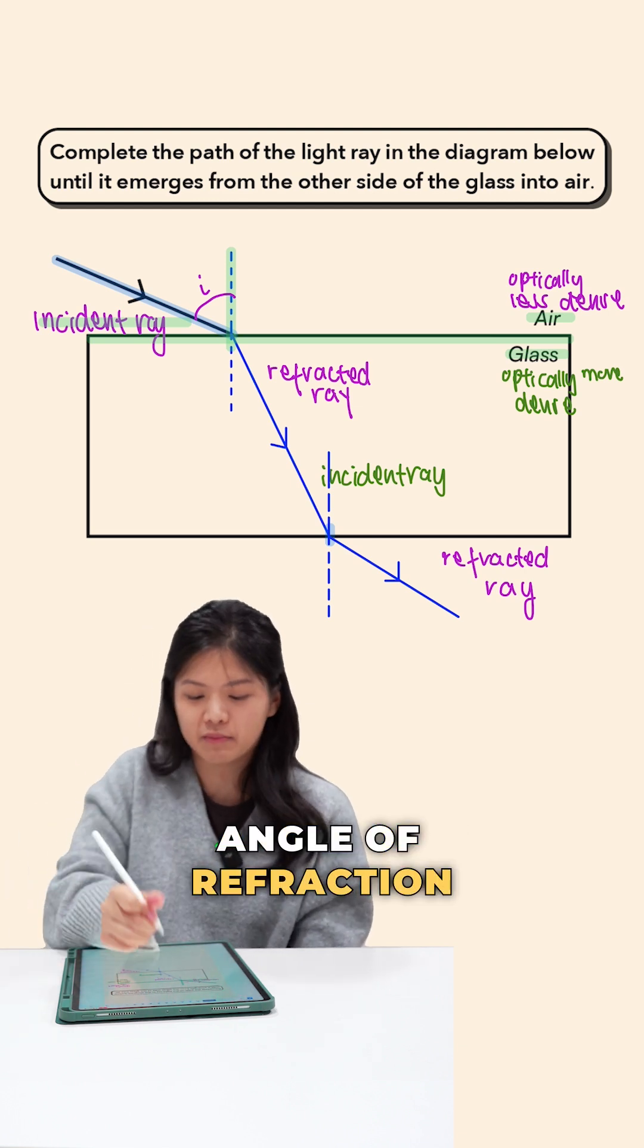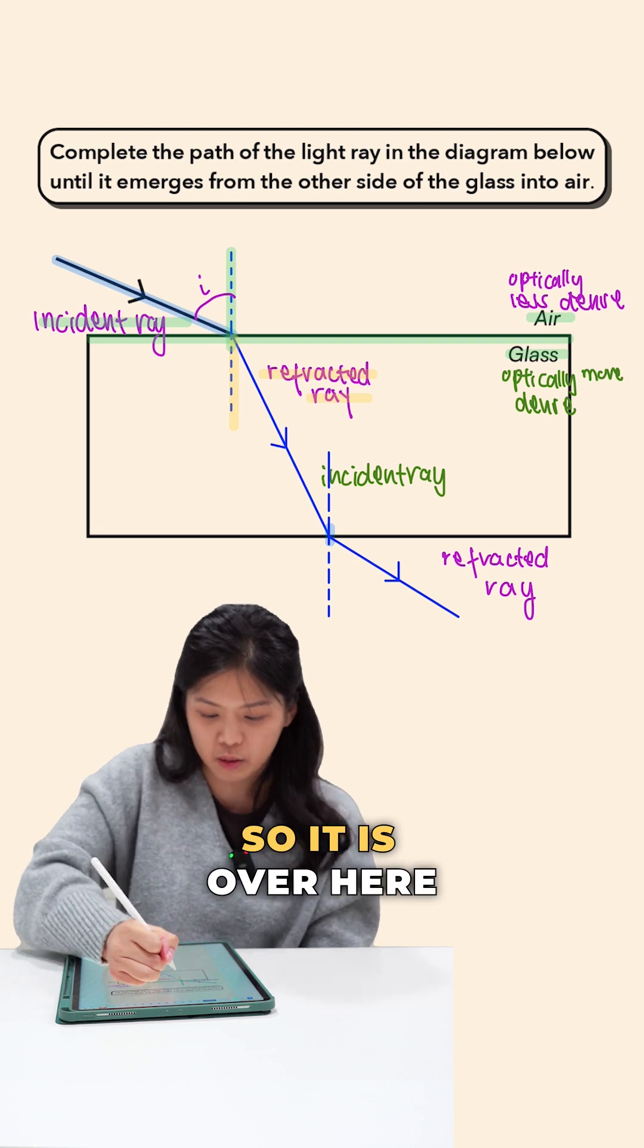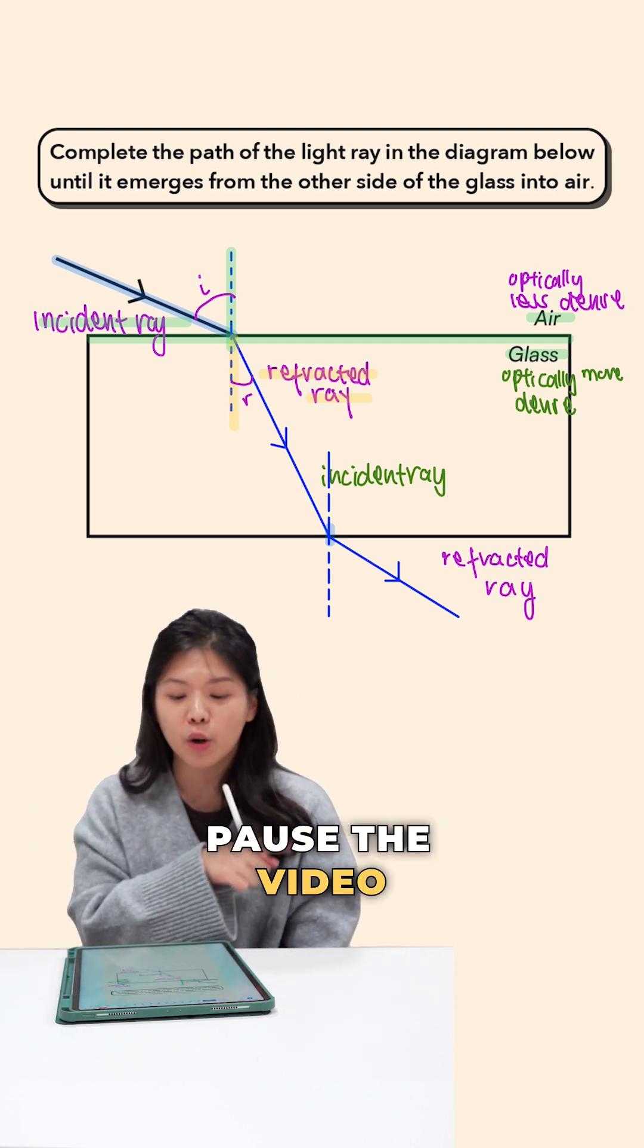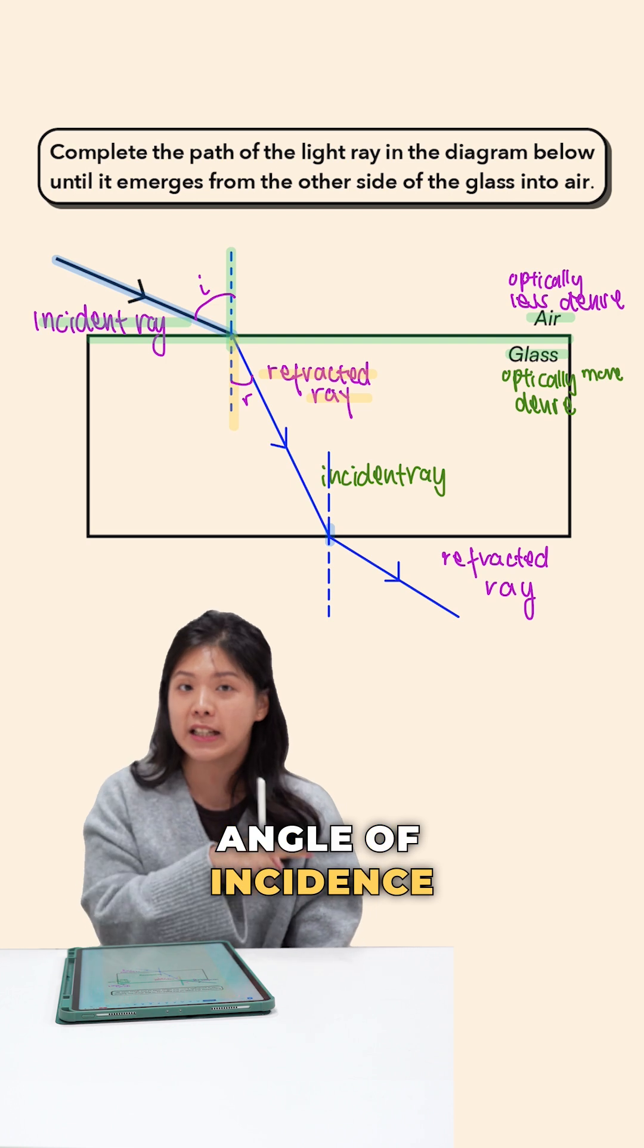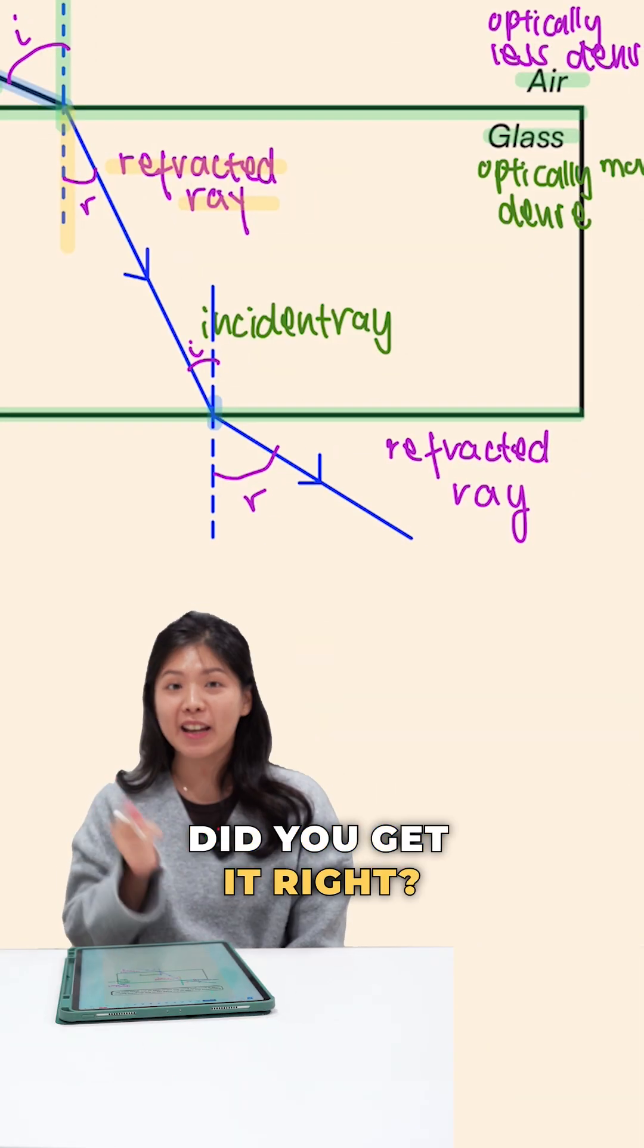What about the angle of refraction? It is simply just the angle between the normal as well as the refracted ray. So it is over here. And let us represent it with an R. So now I want you to pause the video. Go and try to find the angle of incidence as well as the angle of refraction for the lower boundary. Did you get it right? If you did, good job!